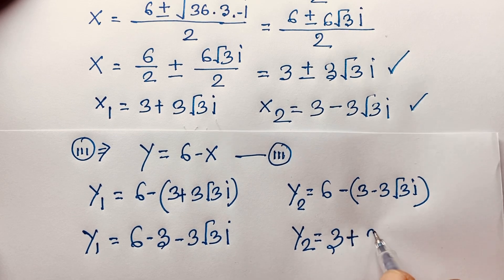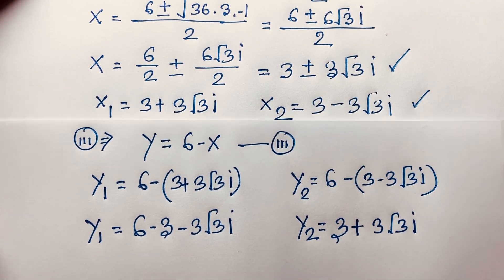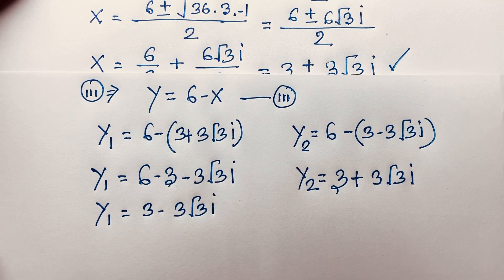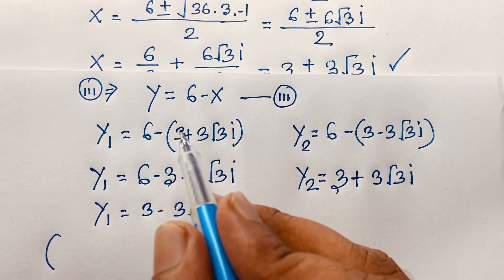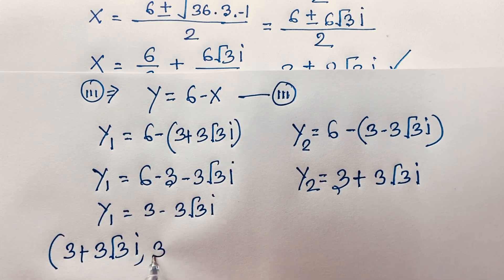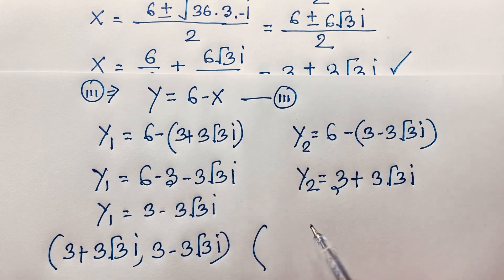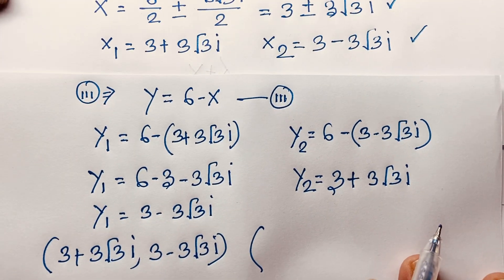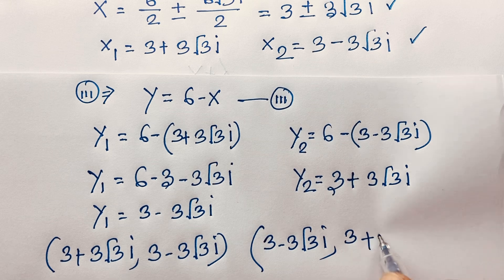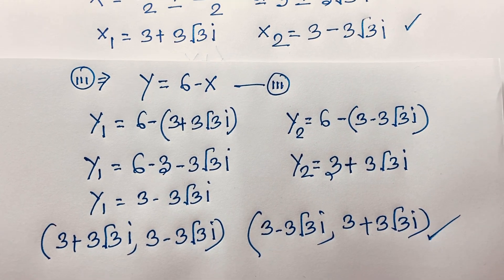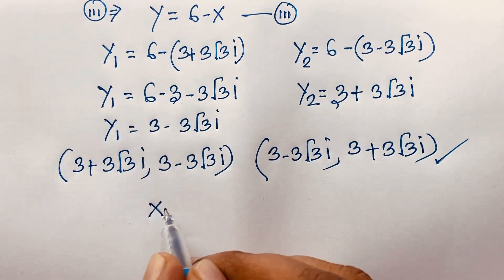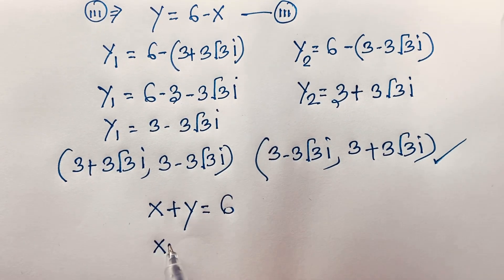So when x equals 3 plus 3√3 i, y equals 3 minus 3√3 i. Both are complex solutions — there is no real solution. Now let's verify. Our original equations are x plus y equals 6, and x times y equals 36.